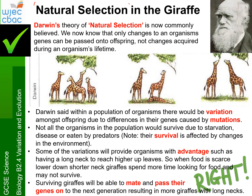Using the example of giraffes, Darwin also noticed there was variation amongst the population of giraffes, and he said these differences might be due to their genes — what we now know are caused by mutations. Darwin didn't know about mutations at this time, but he called them changes. Not all organisms in the population would survive due to starvation, disease, or being eaten by predators, so their survival is affected by changes in the environment. The short-necked giraffe can't reach the leaves on higher branches, so it has to spend more time looking for food and less time breeding and passing its genes on — making it less likely to survive.